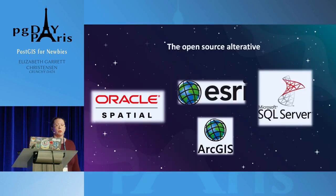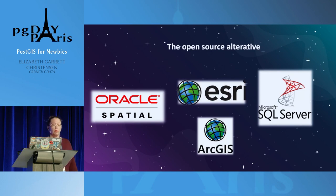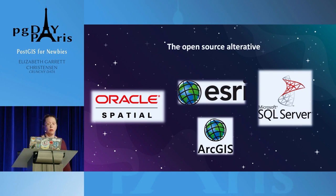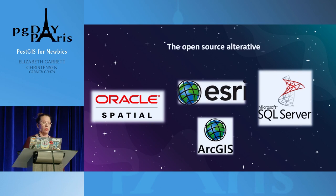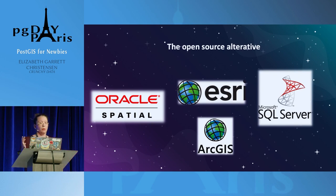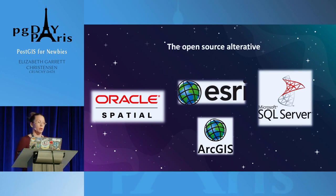PostGIS is the open source alternative to several closed source projects. Esri is definitely kind of the dominating industry leader for closed source GIS, and they have a desktop tool called ArcGIS. Oracle and Microsoft also have spatial capabilities. If you're thinking about working with open source geospatial or getting started and you hear these tools thrown around, it's always a good time to introduce PostGIS into the mix.